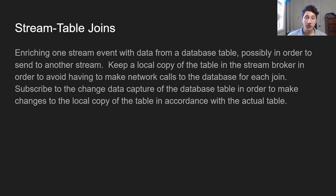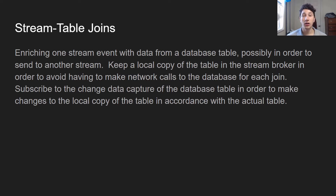Now we have this concept of stream-table joins, where instead of joining two streams together, we have one stream and we're probably trying to enrich an event with some data from a database. So we're going to make a join on a few columns of a database. Obviously, it would be very problematic if every single time a stream event came in, we had to make a very expensive network call to a database. Instead, what we do is we keep a local copy of the database in the stream — we keep some state there — and then every single time that database is updated, we use change data capture to keep the local copy updated. Then we can actually perform the join without having to do any network calls.